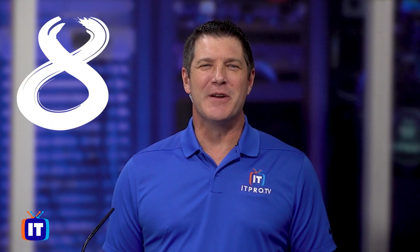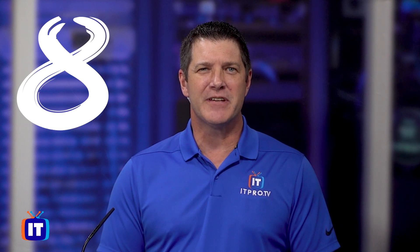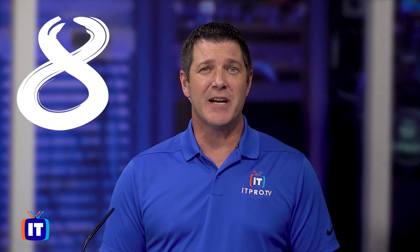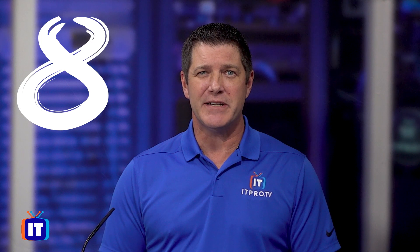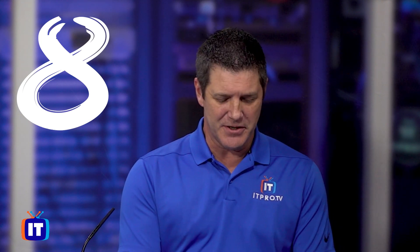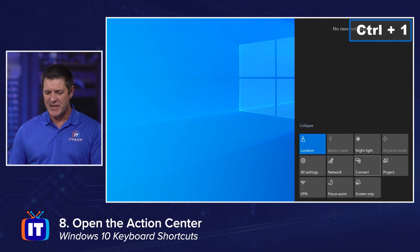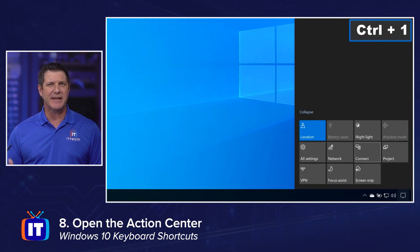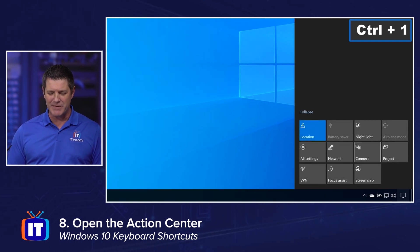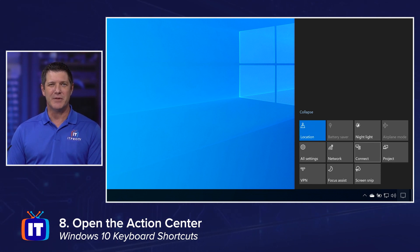The Action Center in Windows 10 is like a one-stop shop for a lot of common settings and notifications, and it's really easy to get there with keyboard shortcut number eight. Windows key A is going to bring up your Action Center. Notice I bring up my Action Center — I've got a lot of cool settings down at the bottom: my nightlight, airplane mode, maybe my VPN, my location, and a lot of other things. Windows key A gets you right to them.